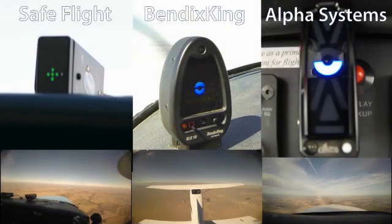Depending on the system, slips can provide very different indications. The Alpha Systems and Bendix King devices must have a clean flow of air, not obstructed by any objects on the wing. During a slip, objects such as tie-down rings or landing gear struts can obstruct the airflow and give erroneous indications. Let's see how the three devices indicate a slip.